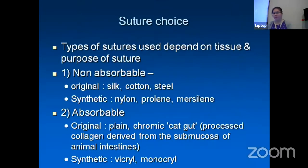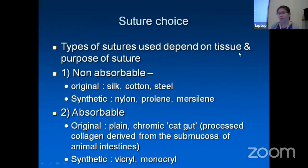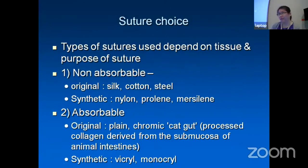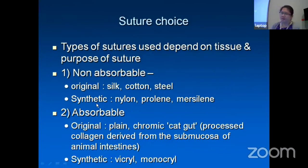Now, sutures. When you do your surgery, what are the different types of suture choices? It depends on the tissue and the purpose of the sutures — why you want to stitch that tissue. Sutures come in non-absorbable and absorbable types. Non-absorbable means it will last very long — theoretically forever, though sometimes it disintegrates and breaks. Natural non-absorbable sutures include silk, cotton, and steel. The synthetic non-absorbable type normally used to stitch the cornea is nylon; Prolene is used for iris repair or scleral-fixated IOL.